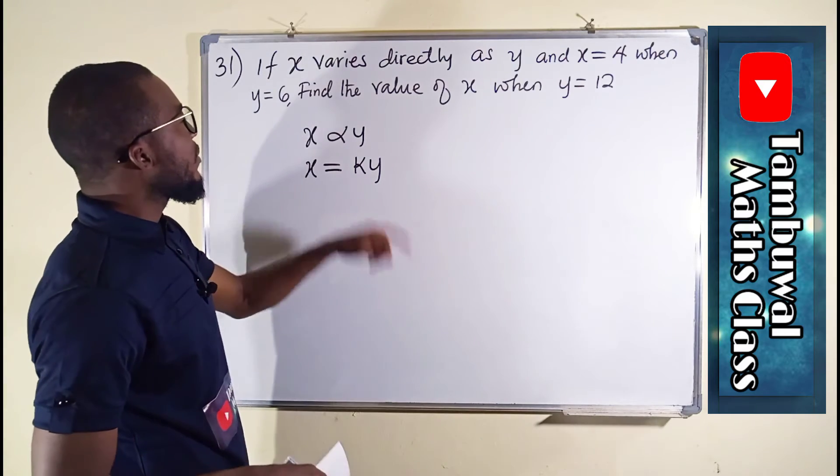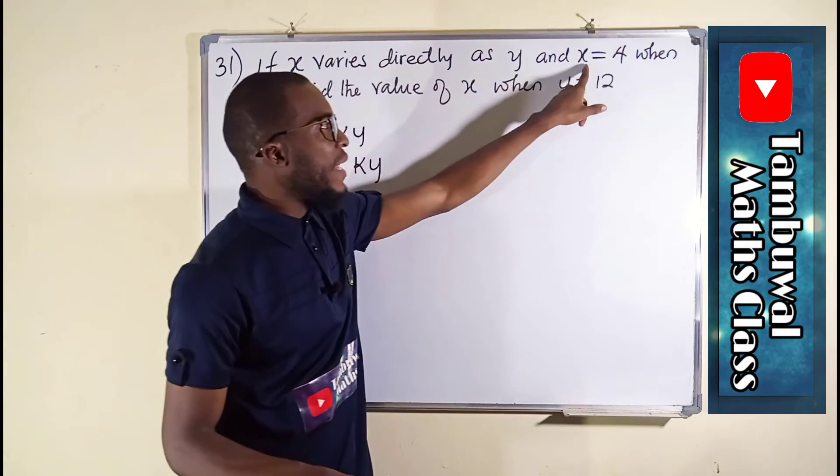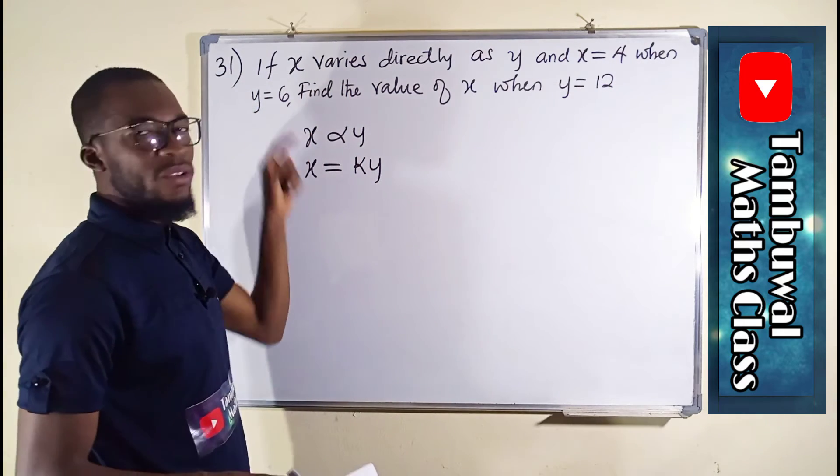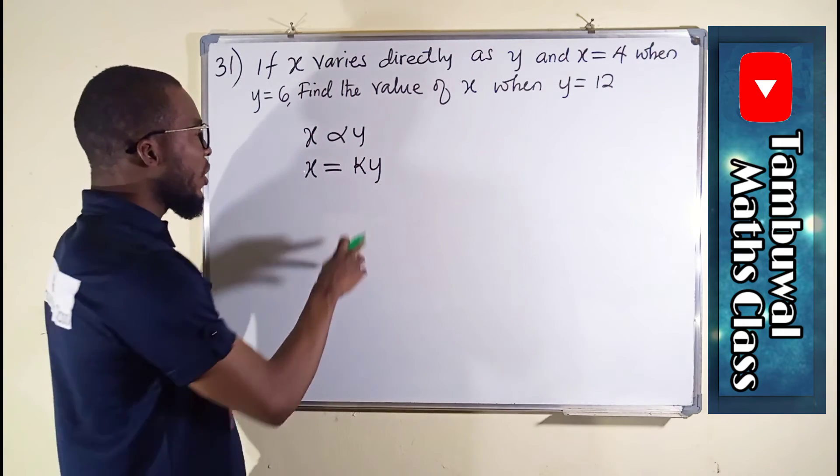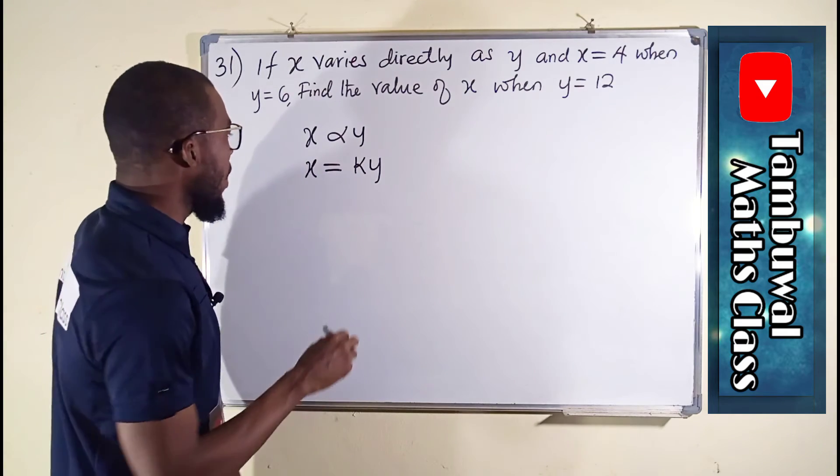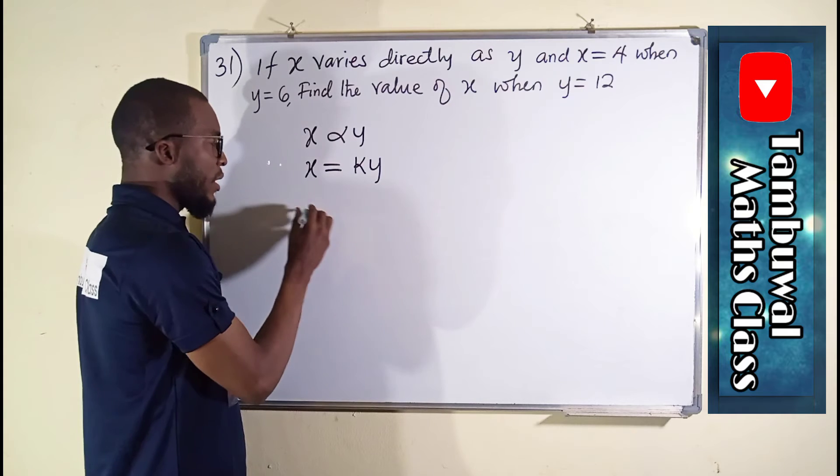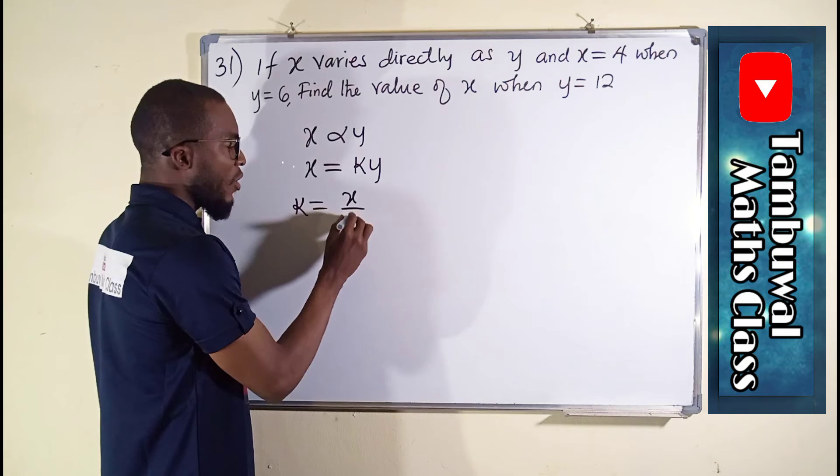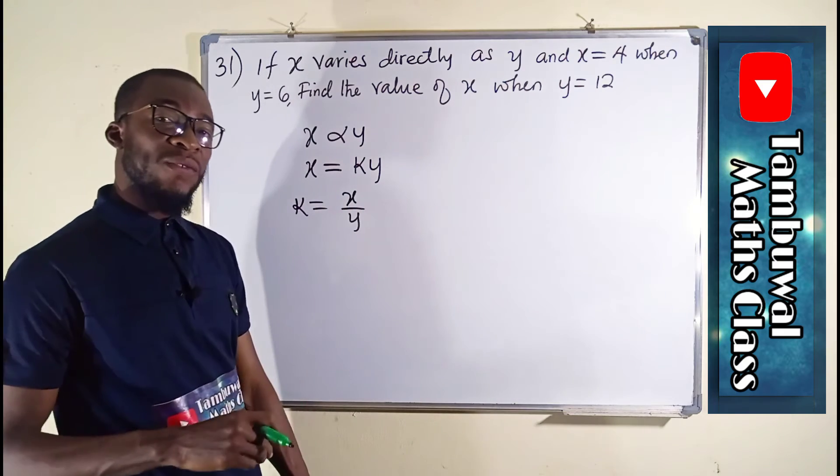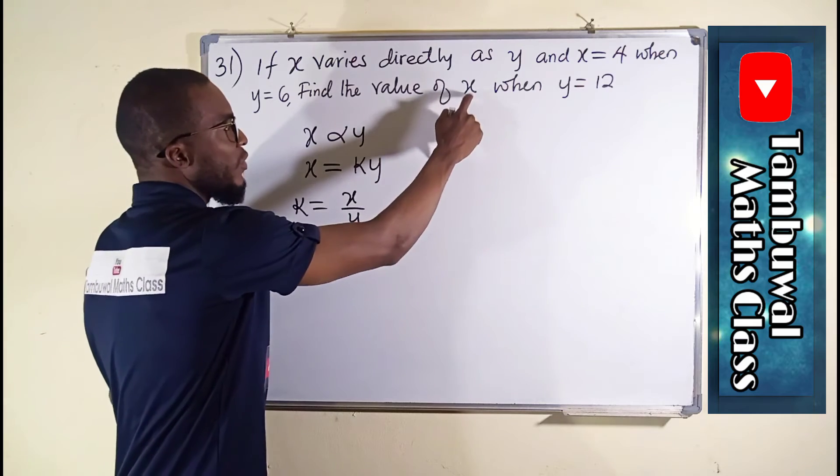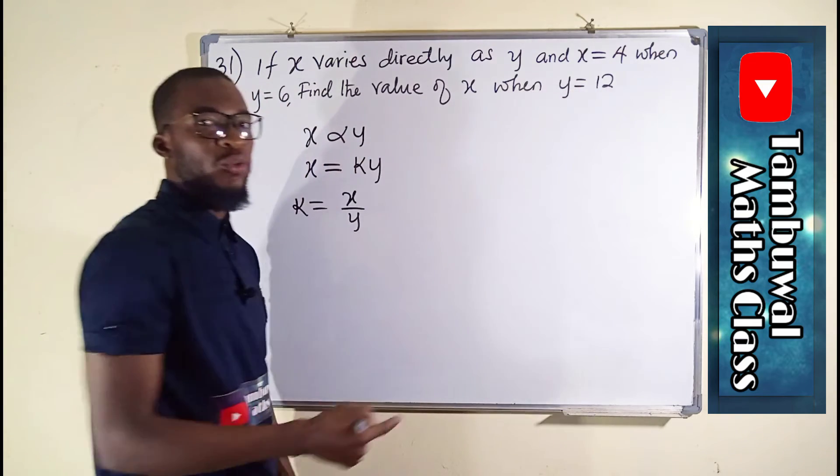It says x equals 4 when y equals 6. First, we want to make k the subject of the relation by dividing both sides by y. So k equals x over y, because we have to find the value of this constant first before we can find the value of x when y equals 12.